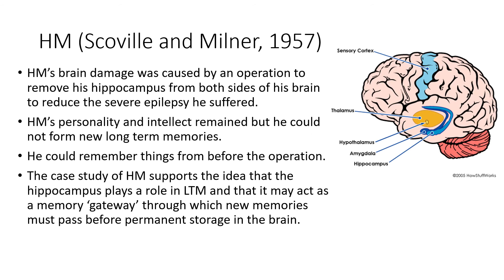HM was studied by Scoville and Milner in 1957. HM's brain damage was caused by an operation to remove his hippocampus from both sides of his brain to reduce severe epilepsy. His personality and intellect remained intact, but he couldn't form new long-term memories — he could remember things from before the operation but nothing new. This supports the idea that the hippocampus plays a vital role in long-term memory and may act as a memory gateway through which new memories must pass before permanent storage.